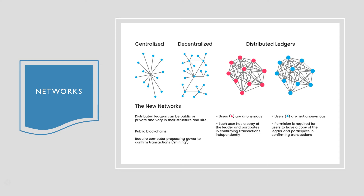Blockchain stores information across a network of personal computers in what's called a distributed and decentralized manner. No single person owns the system and it's difficult for any single person to corrupt it. In a centralized system there is one power hub and everybody receives information from it. In a decentralized situation there are subsequent hubs that no single person controls, but they're also not all connected to each other. In a distributed ledger system — which is how the blockchain works — everyone is responsible for verifying and validating information, making it extremely difficult to tamper with. Blocks that are tampered with will be rejected by other nodes, meaning you'd need to tamper with all blocks, redo the proof of work for each, and take control of more than 50% of the entire peer-to-peer network, which is almost impossible.